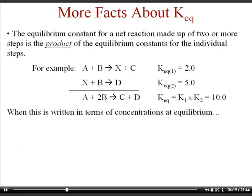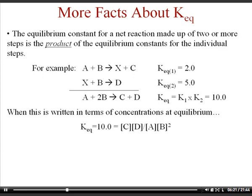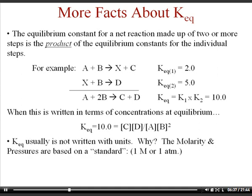If you write these values in terms of their stoichiometry, you'd have the concentration of C times the concentration of D — the products — divided by the concentration of A and the concentration of B squared, because there's a 2 in the balanced chemical equation. This again illustrates products divided by reactants raised to their stoichiometry powers.